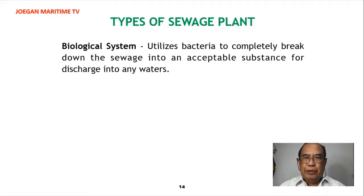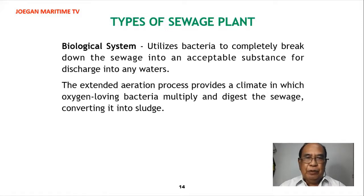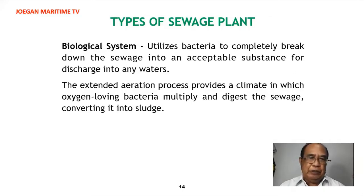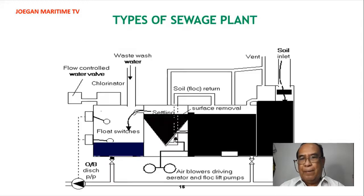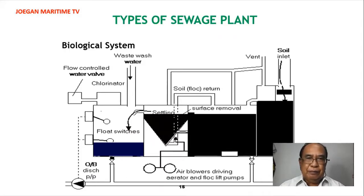The biological system sewage plant utilizes bacteria to completely break down sewage into an acceptable substance for discharge into any waters. The extended aeration process provides a climate in which oxygen-loving bacteria multiply and digest the sewage, converting it into sludge. This is an example of a biological system sewage plant.